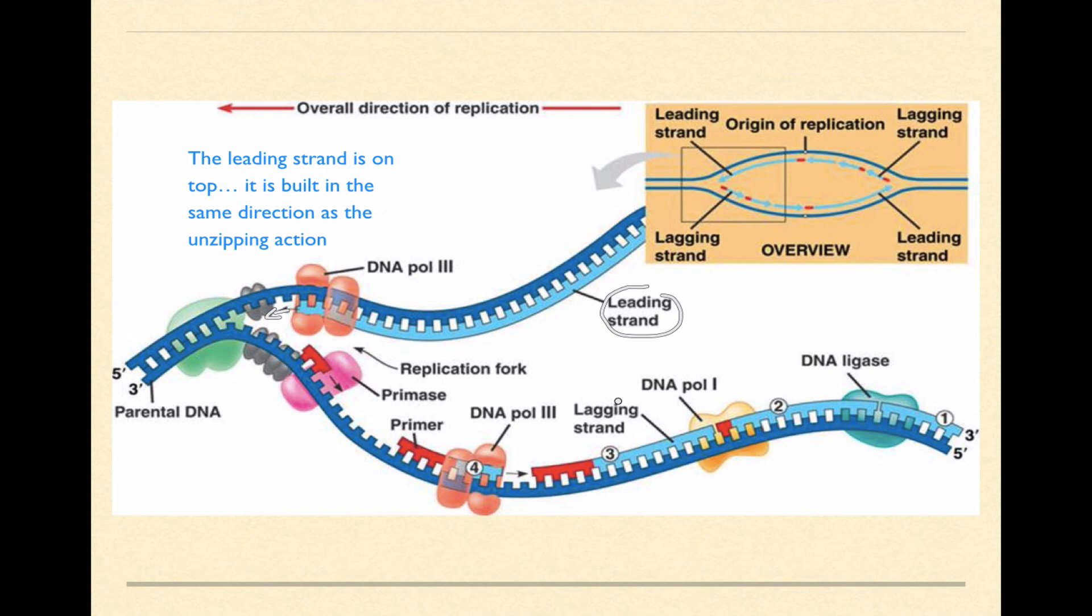Whereas the lagging strand is down here, and it's being replicated in the opposite direction. So because the primase can't add the primers until this opens up, you can see how we end up with these fragments, these little sections of new DNA that are being added piece by piece as it opens up in the opposite direction.